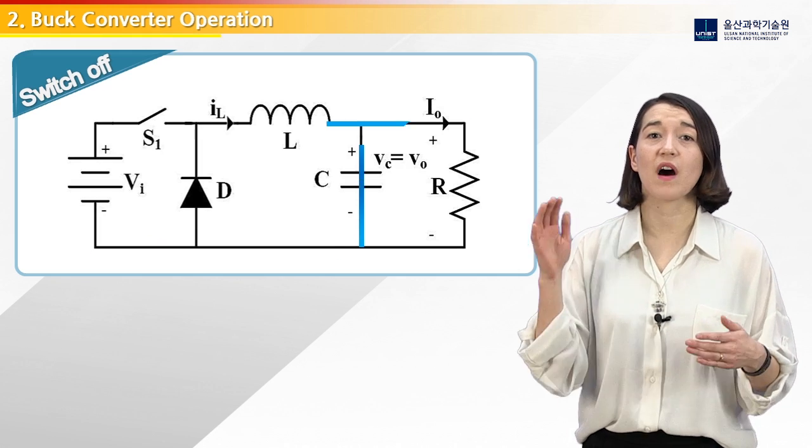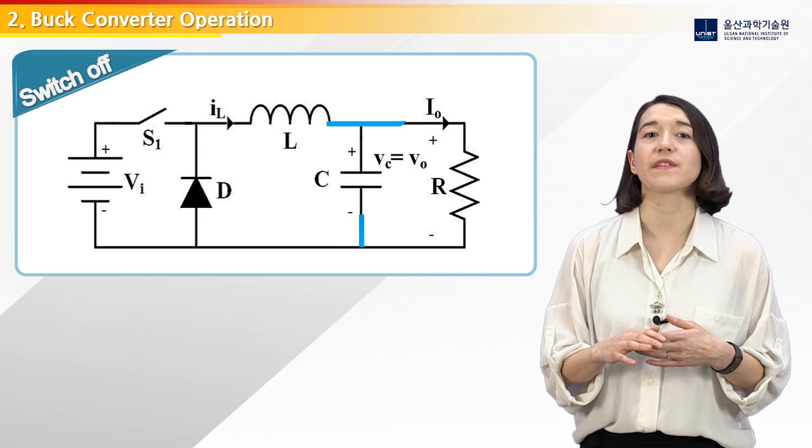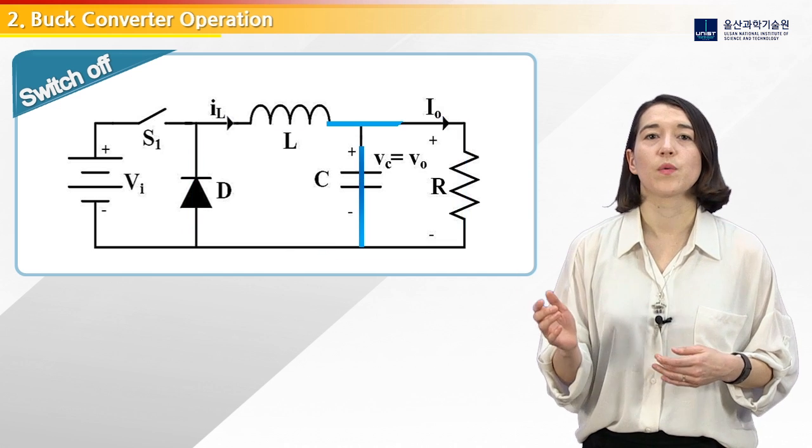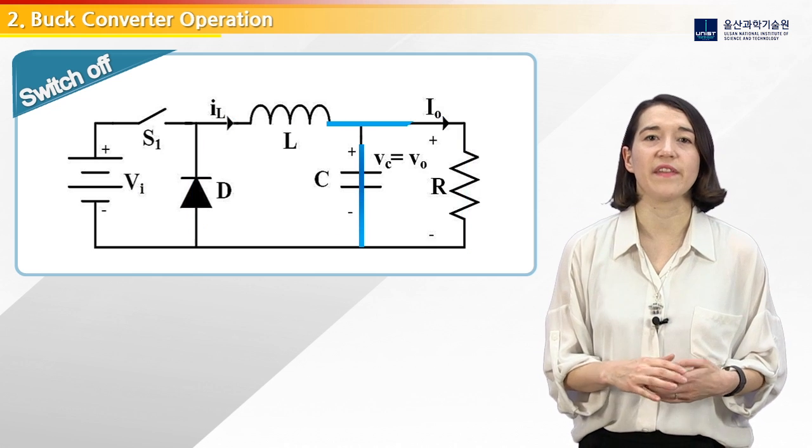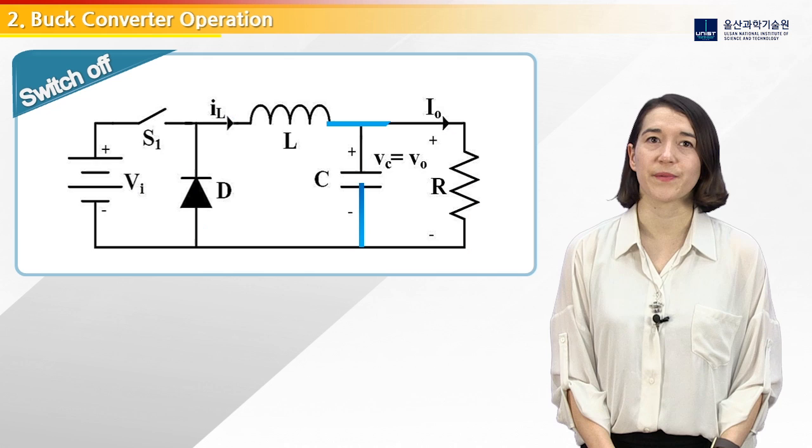When the switch is off, the current flow is as shown here, where the stored energy in the inductor and capacitor begin to discharge, and the diode turns on to allow for proper current flow.